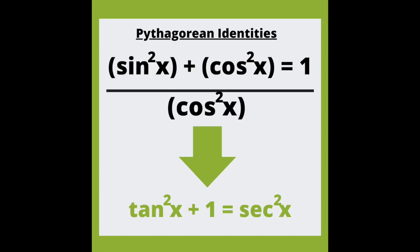Divide both sides by cosine and get tan squared X plus 1 equals secant squared X. Divide both sides by sine and you'll get cot squared X plus 1 equals cosecant squared X.